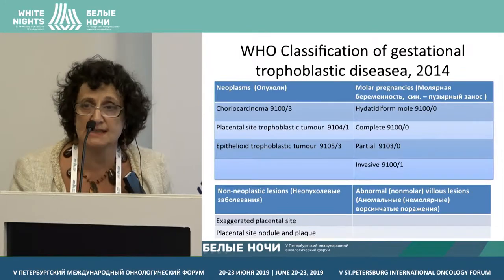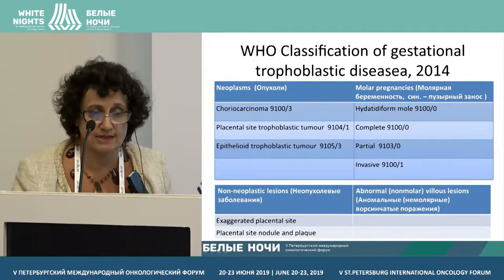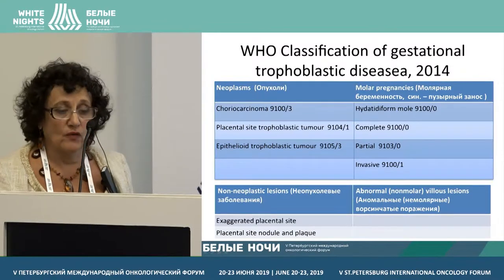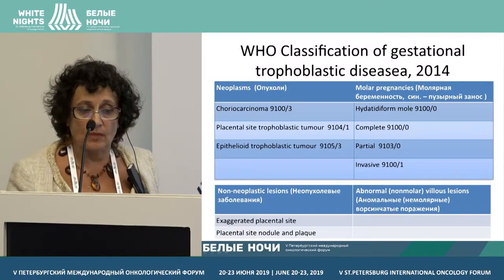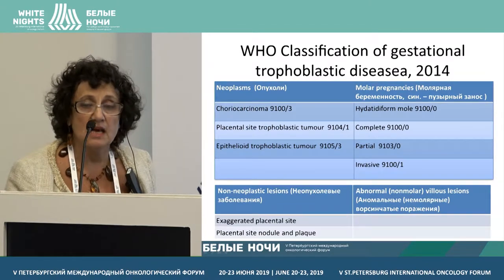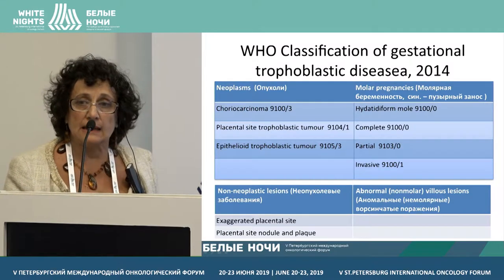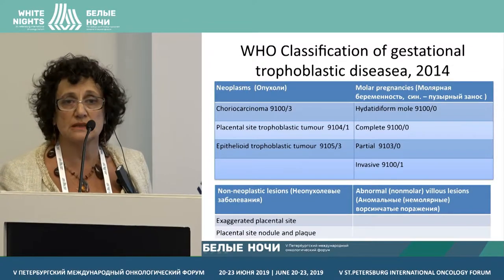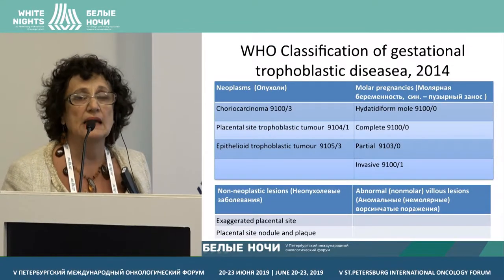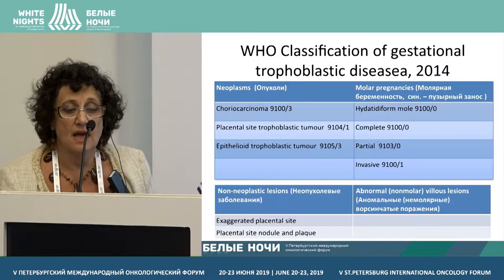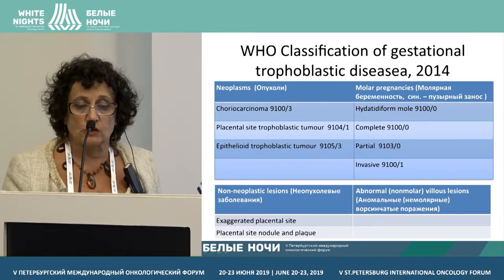According to the WHO classification of gestational trophoblastic disease, dating back to 2014, all of them are classified into neoplasms and non-neoplasms. Choriocarcinoma is classified as a tumor, as are tumors of the placental site and epithelioid type of tumor, or the so-called molar type of pregnancy. There are several terms, but they are synonymous to one another.